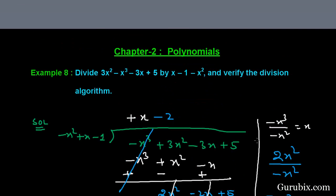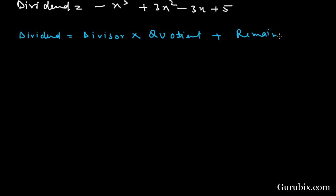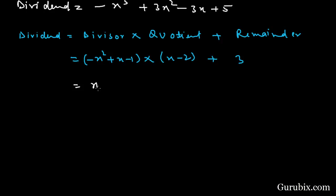Now we shall verify the division algorithm. The division algorithm states that dividend equals divisor multiplied by quotient plus remainder. The divisor is minus x squared plus x minus 1, the quotient is x minus 2, and the remainder is positive 3. We multiply x with minus x squared plus x minus 1, and minus 2 with minus x squared plus x minus 1, then add 3.